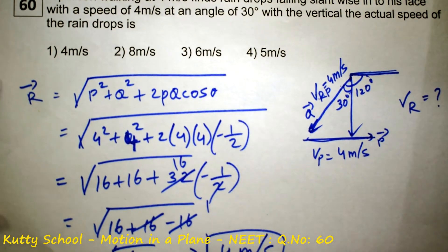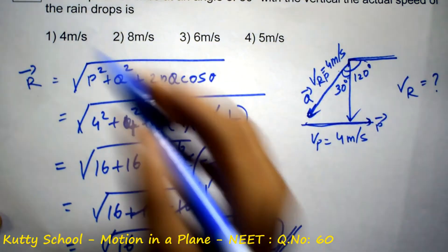So the actual velocity of the rain is 4 meters per second, using the vector method.